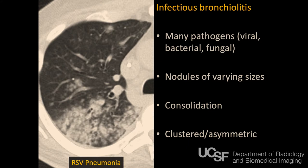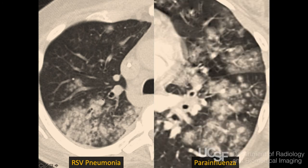You start with nodules — they're going to be centrilobular nodules, inferring that this is involving the small airways. That's where this process is starting. As they get bigger and coalesce, you can see other findings as well. One point I want to impress upon you is that usually this is an asymmetric disease — it's not going to involve the entire lung symmetrically, as some non-infectious causes of small airways disease can.